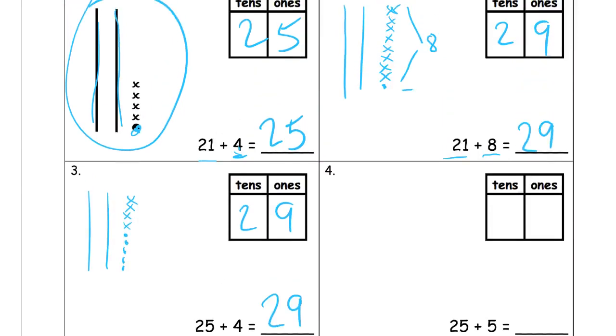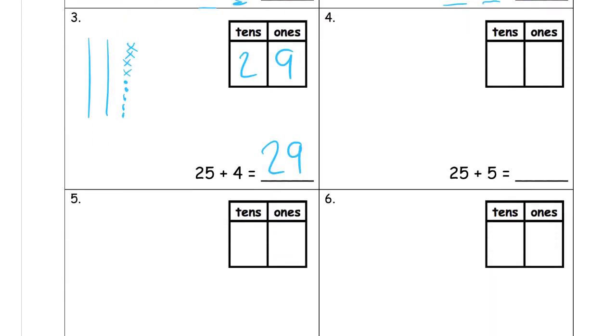25 plus 5. So now here we'll draw the 25: two tens, one, two, three, four, five. And then five more: six, seven, eight, nine, ten.